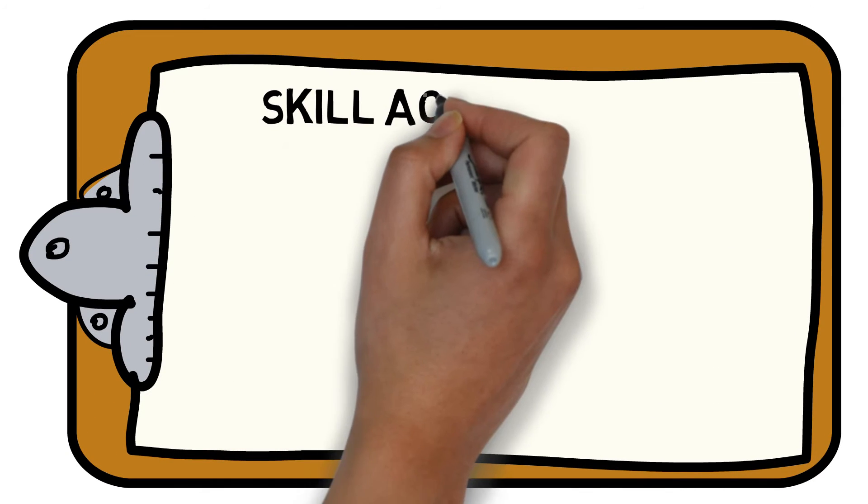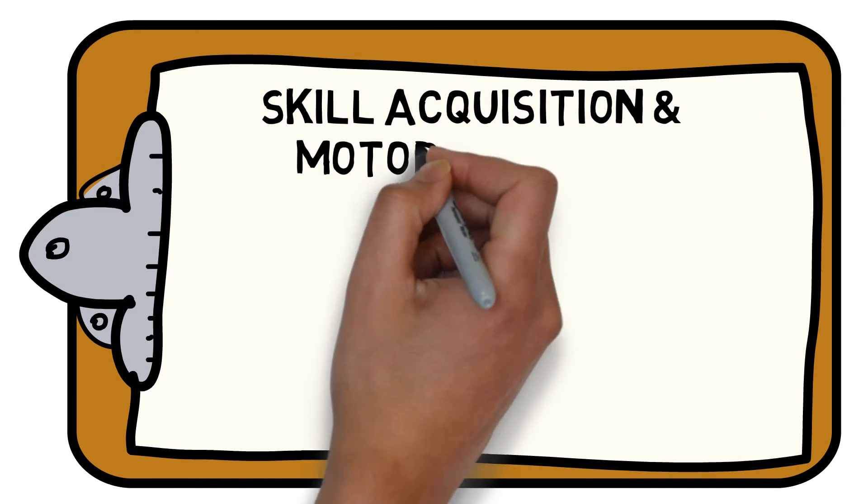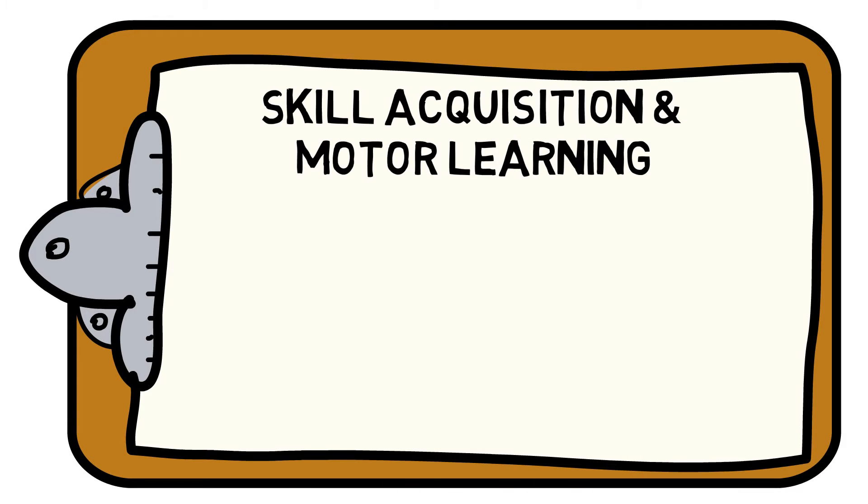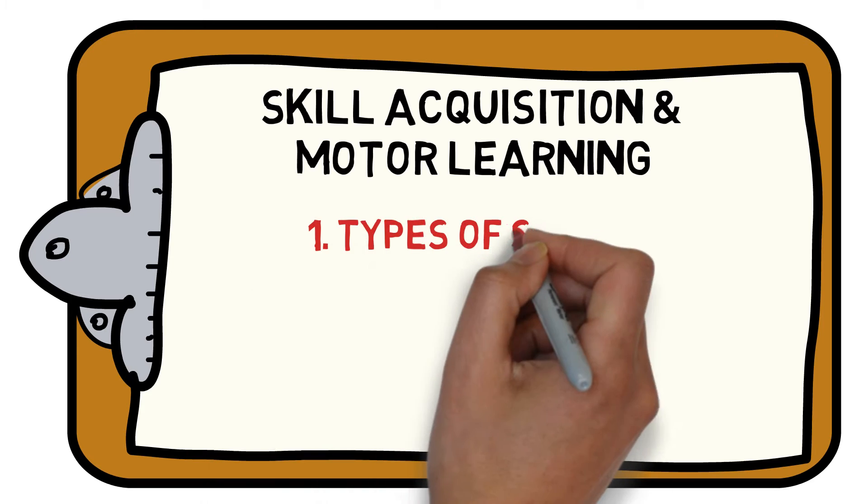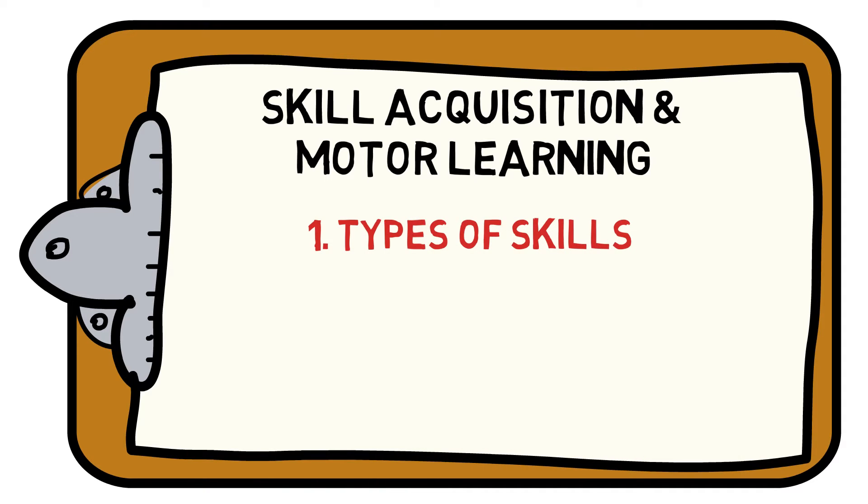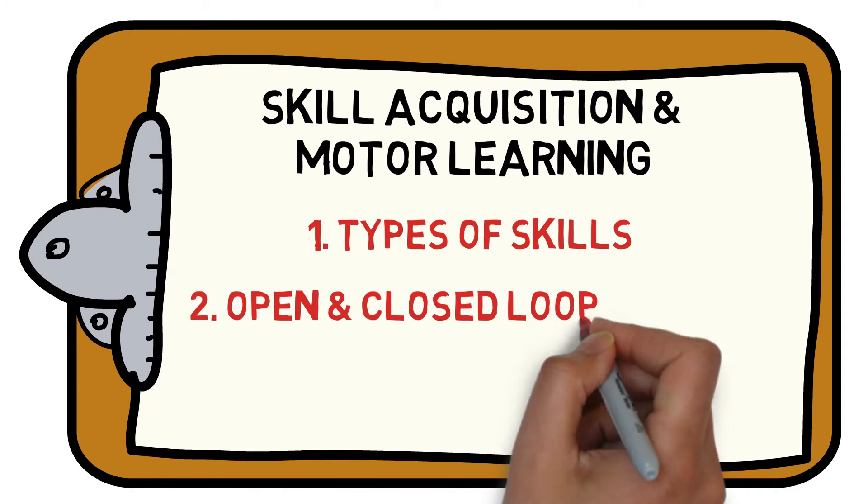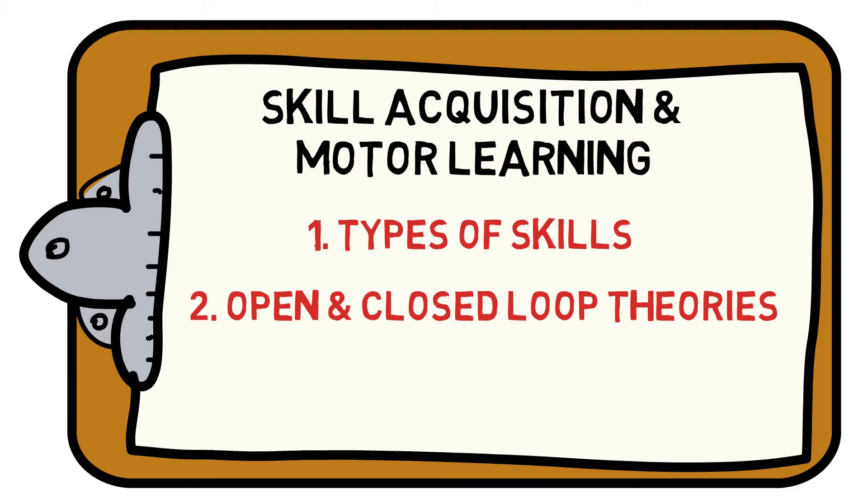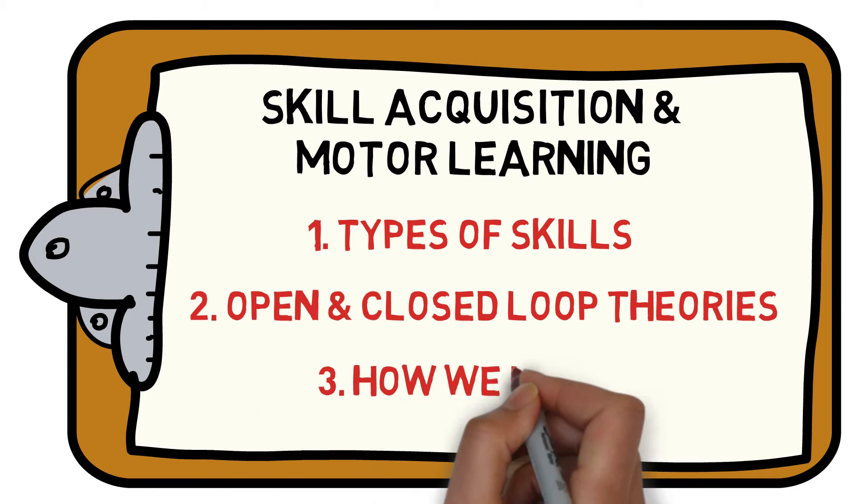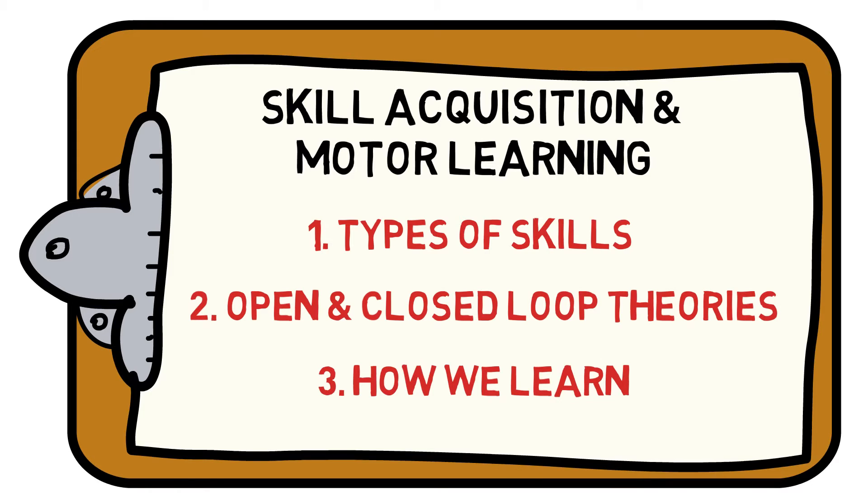Welcome to the Sports Science Hub's guide to everything you need to know about the fundamentals of skill acquisition and motor learning. We will help you understand the different types of skills, the difference between open and closed loop theories, and how we learn. Let's get started.